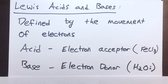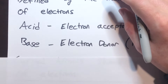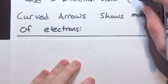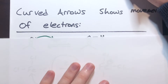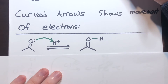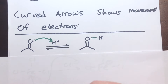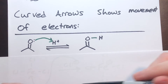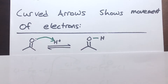Lewis acids and bases all function on this idea of curved arrows showing the movement of electrons. This is similar to resonance, where we show that bonds are moving with arrows indicating the relocation of electrons to form a new bond from a lone pair or negative charge.